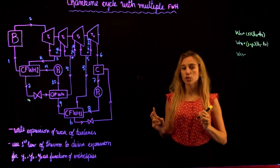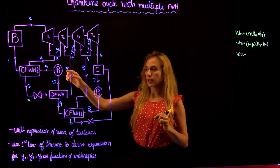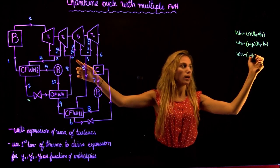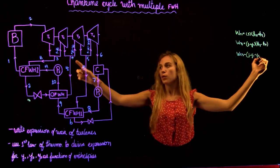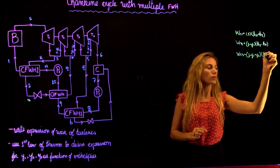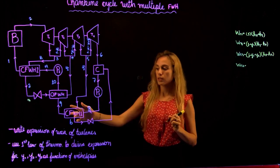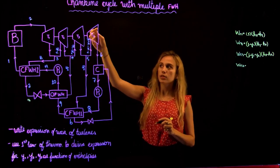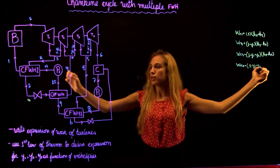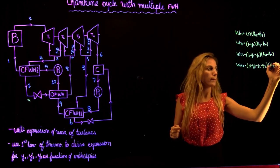After the expansion of the second turbine, we have another split where a portion Y2 leaves to go to the open feed water heater. This leaves 1 minus Y1 minus Y2 going to the expansion of the third turbine, which contributes H4 minus H5. Then again we have our last split where Y3 leaves for the first cross feed water heater, and the rest goes through the last expansion: 1 minus Y1 minus Y2 minus Y3, times H5 minus H6.